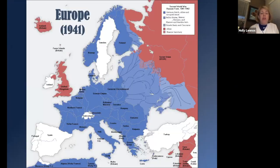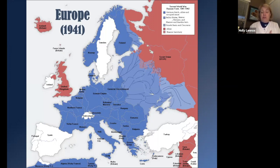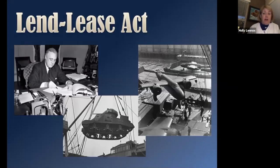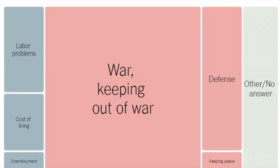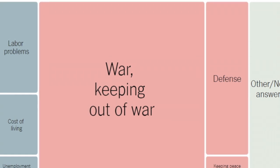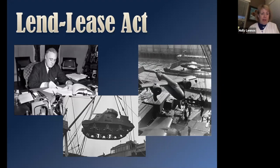By 1941, Europe is definitely under control of the Axis powers. You can see the advancement Germany has made into France — Italy, Romania, Serbia, Croatia, all these countries are now under occupation of Germany and the Axis powers. Meanwhile, the United States is still trying to maintain neutrality. The majority of the American people want to stay completely out of this war, as shown in that New York Times graphic from 1941.